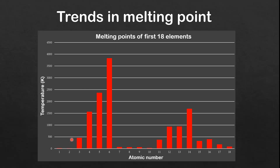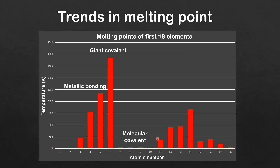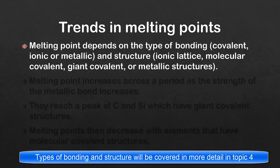The melting point of elements depends on their bonding and their structure. For Period 2: lithium, beryllium, and boron have metallic bonding; carbon has a giant covalent structure; and nitrogen, oxygen, and fluorine have molecular covalent structures. For Period 3: sodium, magnesium, and aluminium have metallic bonding; silicon has a giant covalent structure; and phosphorus, sulfur, and chlorine have molecular covalent structures.